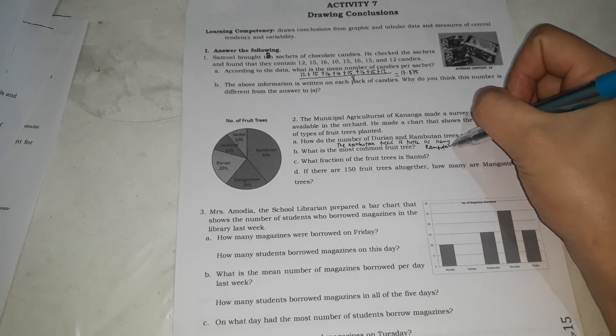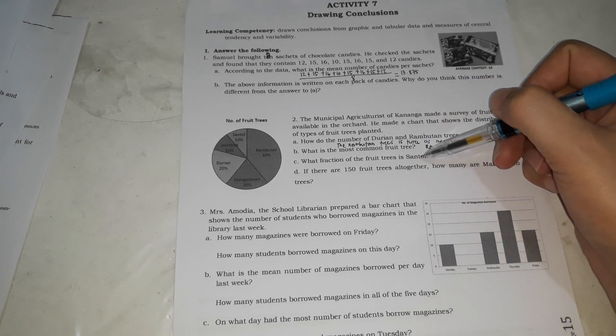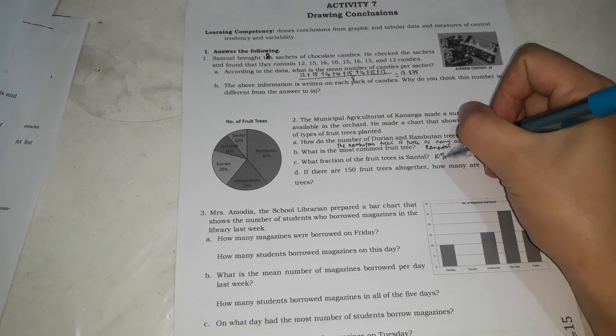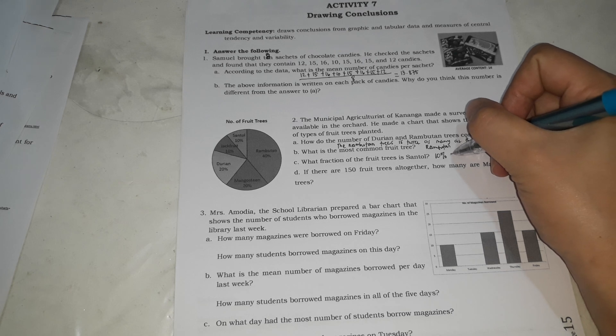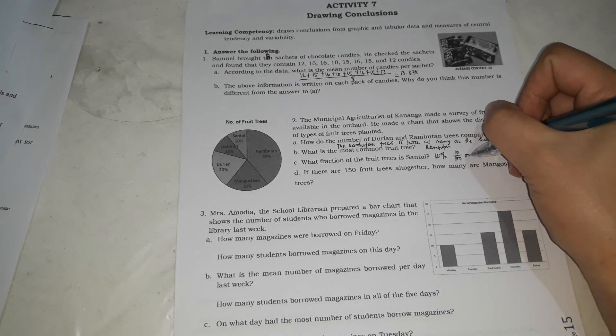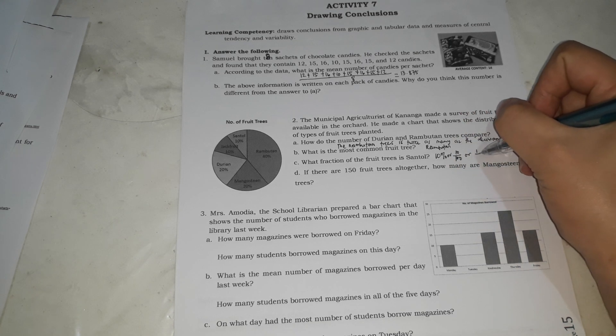Next, what fraction of the fruit trees is sentul? So, what fraction? It's 10%. So, 10% or, kung fraction talaga natin, it's 10 over 100 or simply 1 over 10. 1 tenth.